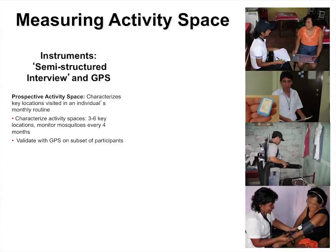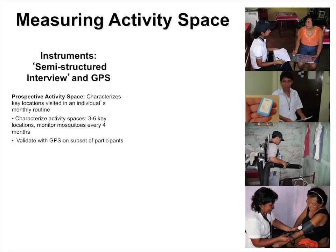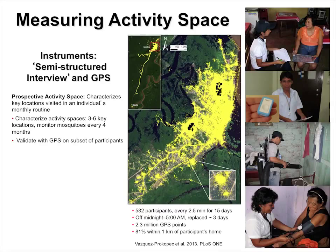We had about 600 participants. We recorded where they were every two and a half minutes for 15 days, turning the GPS units off at night since Aedes aegypti doesn't bite at night, which also extended the batteries. I ended up with almost two and a half million GPS readings; each yellow dot is a reading for where a person was. The people lived in two communities — the black dots are their houses — and you can see all the different places they went, including a road down to a town south of Iquitos. This let us characterize what places a healthy person visits, how many places there are, and where they'd be most exposed.